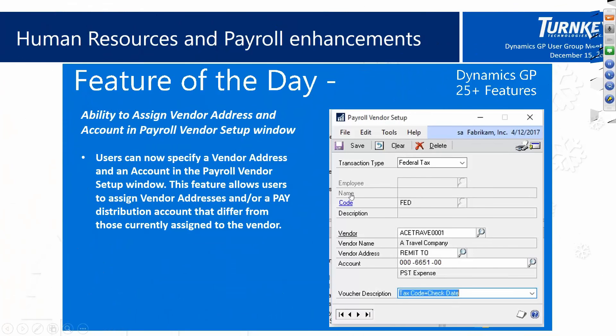On the HR/payroll side, they've added the ability to assign a vendor address and account number when you have a vendor tied to your payroll. If you've got a vendor used for federal tax that may also be used for tax elsewhere in the system, you can specify that we want to pay that vendor address and have it affect a specific GL account. These specific fields have been added to the vendor payroll setup when configuring those vendors.